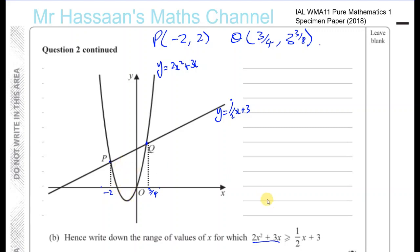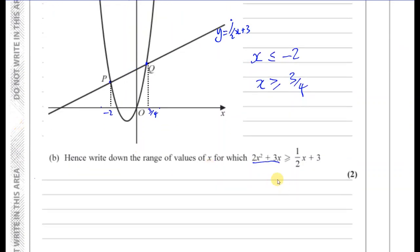So we can say that the answer to this part of the question is, this is true when x is less than or equal to minus 2, and when x is greater than or equal to 3 quarters. This is the range of values of x for which this statement is true. So I hope that was clear in this question. And question number 3 will be in the next video.